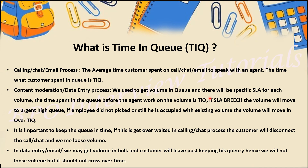In content moderation or data entry processes, volume arrives in bulk into the queue with a specific SLA. Suppose there are forms to be filled, and 100 to 200 have already been enqueued. The SLA to submit one form could be 24 hours or 15 minutes — it depends on the process. If that SLA is being breached, it becomes Over TIQ — Over Time in Queue. This happens when agents took more time on a form, or there is less headcount to handle the volume.